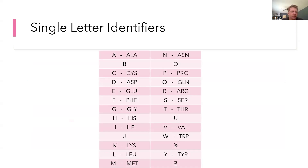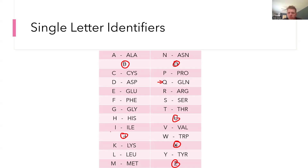The single-letter codes are equally important. The letters not used are B, O, U, J, X, and Z — six letters from our 26-letter English alphabet not used among the 20 proteinogenic amino acids. Glutamine is Q, one of the funky ones. On an exam you might be asked: what is the single-letter code for alanine, or for proline? Make sure you're comfortable and familiar with all of these.